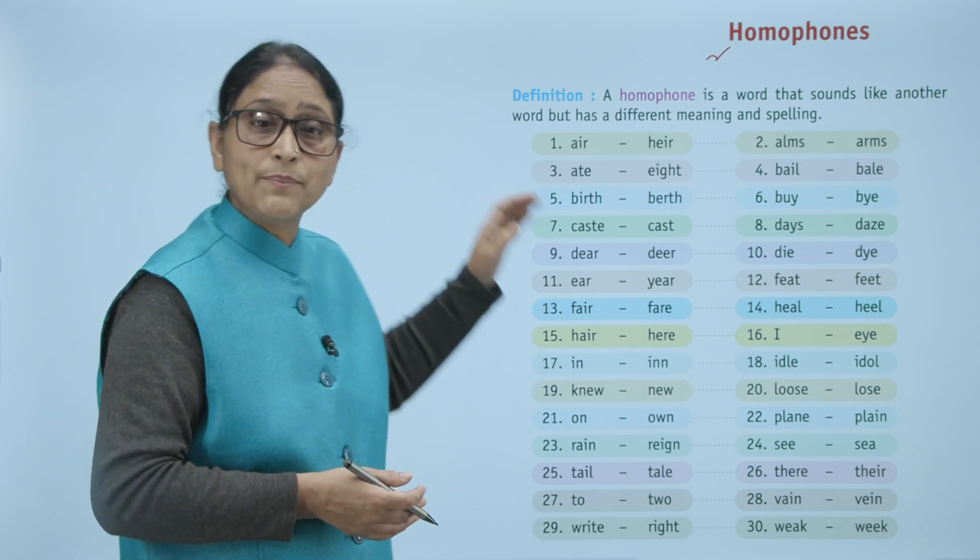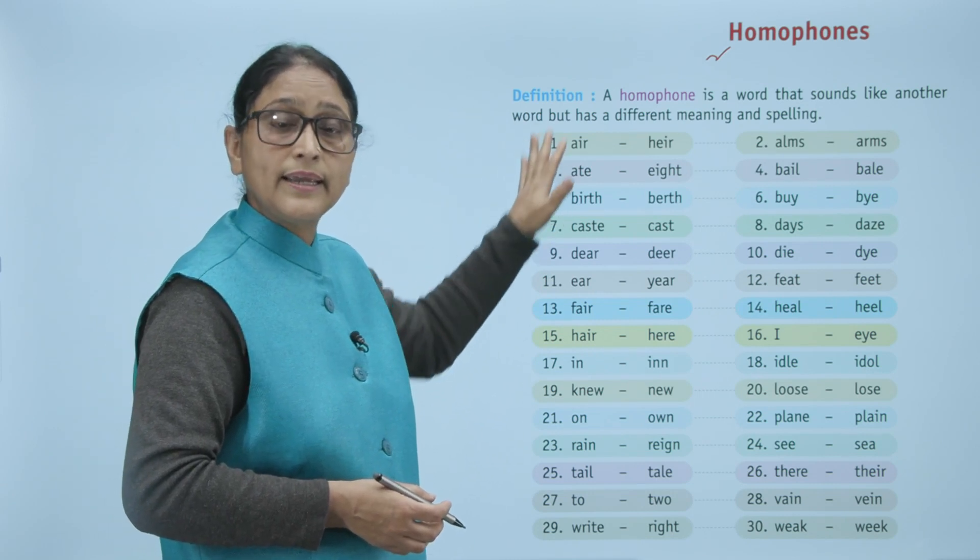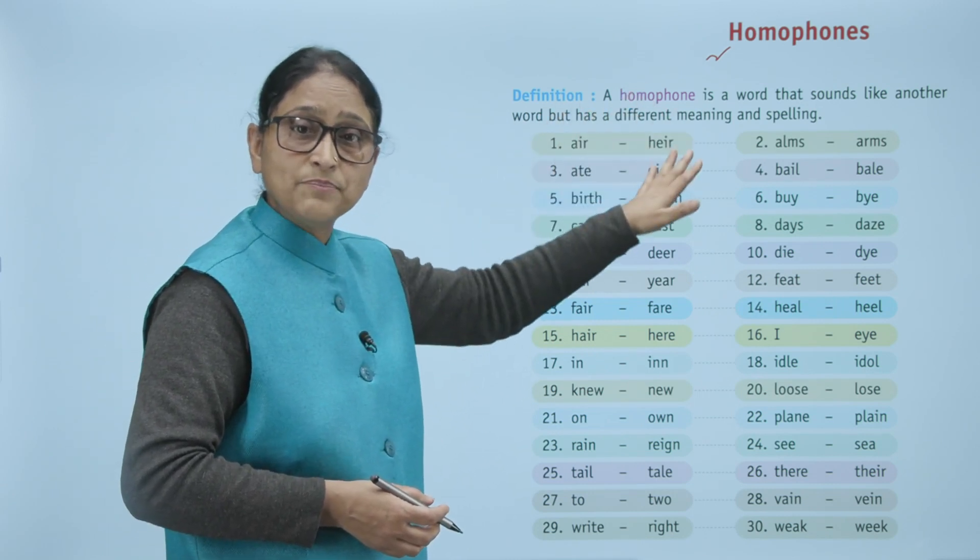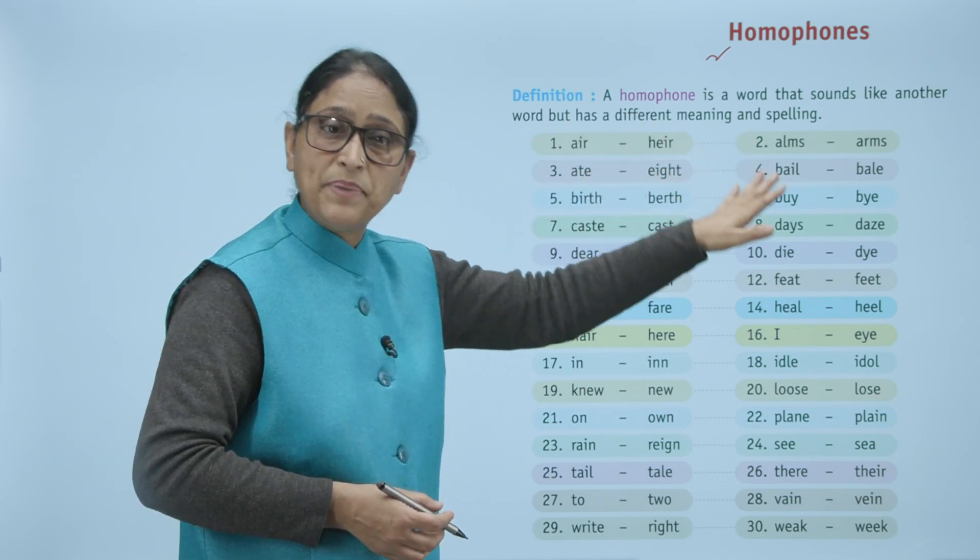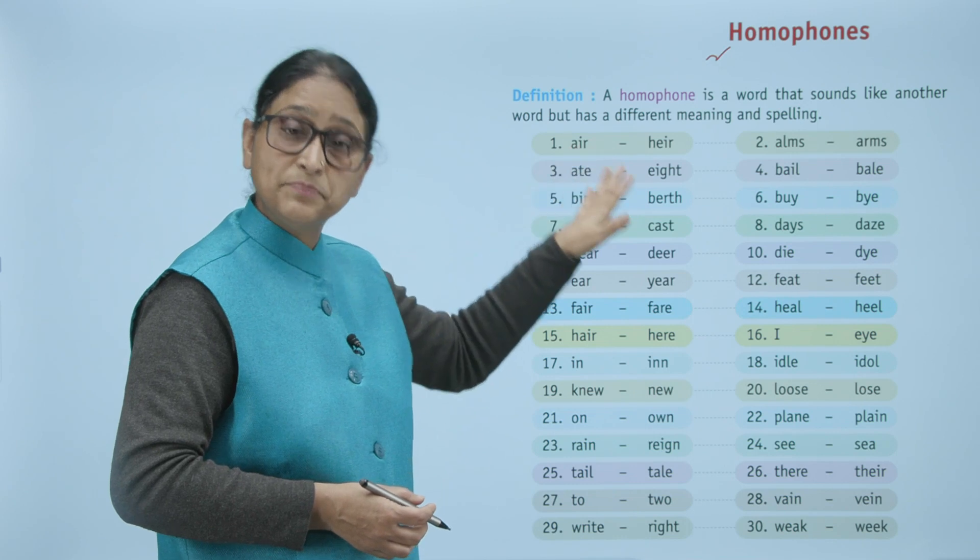For example, number one: air, heir. Arms, alms. Eight, ate. Bail, bale. Birth, berth.